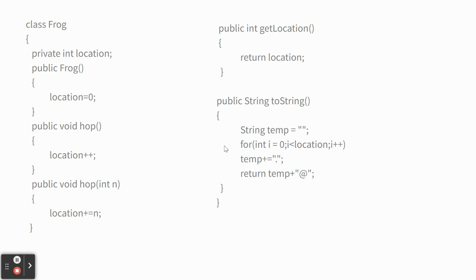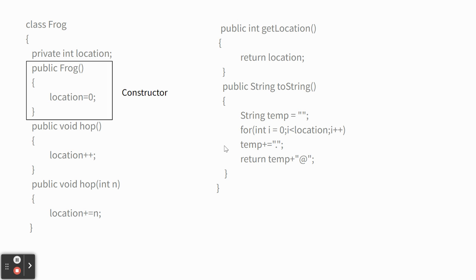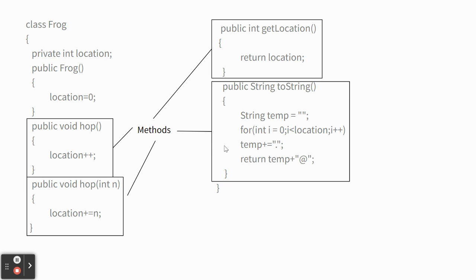Here's a class you're going to use today — it's the Frog class. It has different methods and makes you practice your Java skills. That's the constructor: when you create a new Frog object you don't send any information over, you just say 'Frog frankie = new Frog()'. A Frog has one variable called location, which is how far it has hopped — like a number line, all positive.